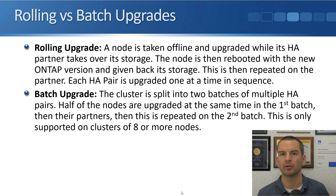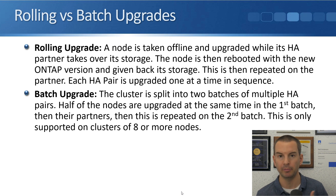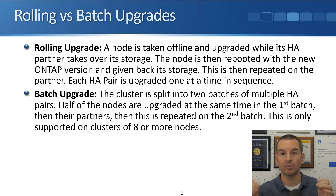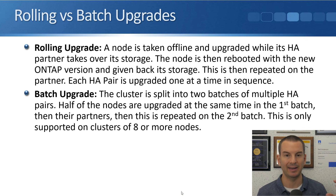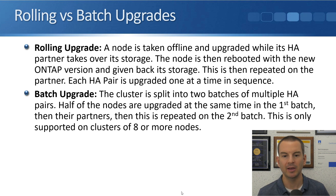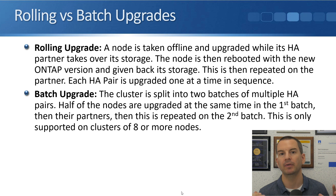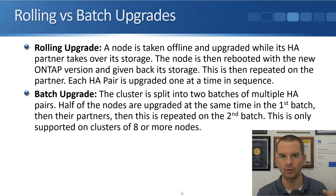It takes around half an hour per node to be upgraded. The other approach is a batch upgrade, where the cluster is split into two batches of multiple HA pairs. Half of the nodes are upgraded at the same time in the first batch, then their partners, and then the same is repeated on the second batch — so there are effectively four parts. The batch upgrade is only supported on clusters of eight or more nodes, but when you do have eight or more nodes, the upgrade completes more quickly than with a rolling upgrade.